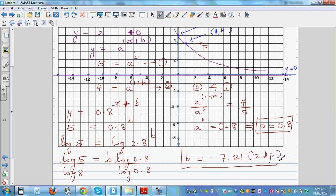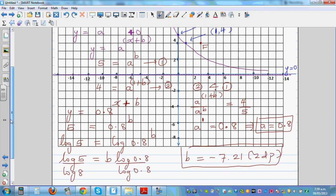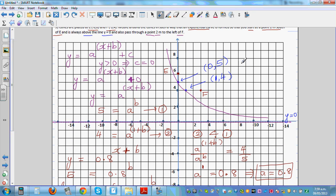So the final equation is y equals 0.8 raised to x minus 7.21. Let me confirm this. It's not exact because you will not get the exact answer because you are doing a rounding.